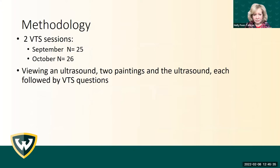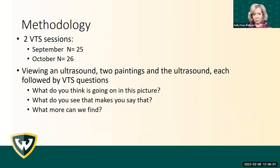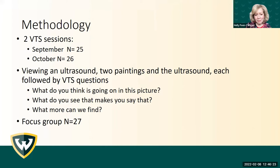The 50 participants who completed pre-assessments could select one of two scheduled VTS sessions — one in September and one in October. Due to COVID, the sessions were offered virtually. In the session, participants saw an ultrasound image followed by VTS questions, two paintings from the university art collection each followed by VTS questions, and then another ultrasound image. For the second painting, participants were asked to first spend five minutes drawing what they saw before answering the VTS questions. Then we had a focus group.